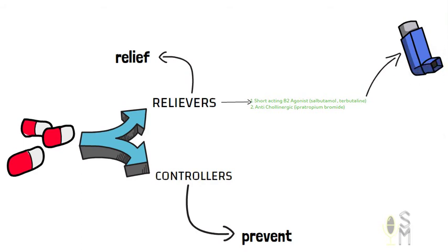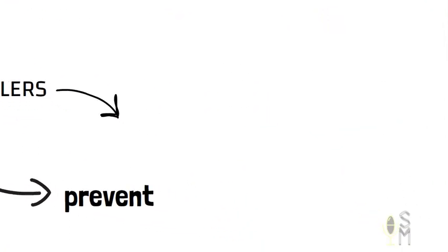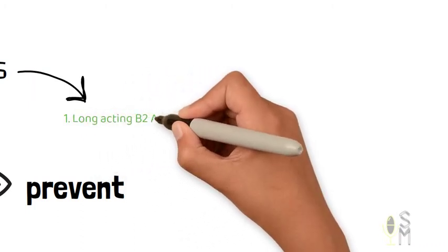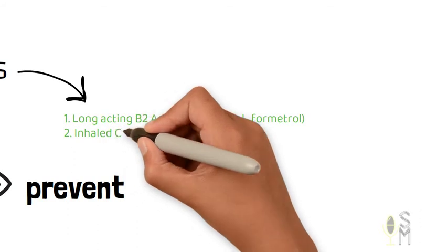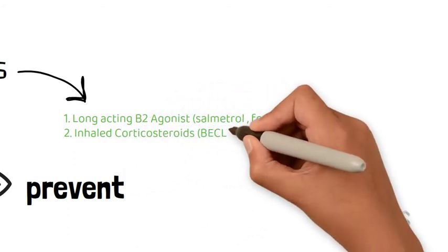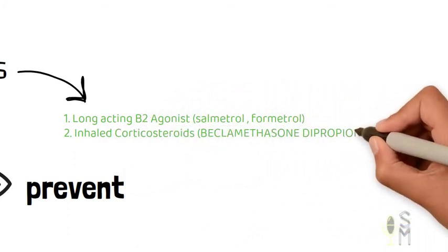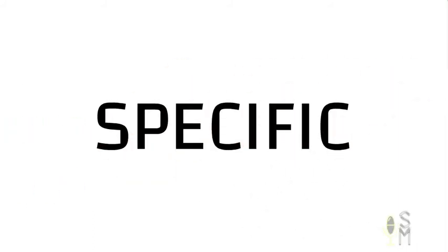Examples of controllers are long-acting beta-2 agonists like salmeterol and formoterol, or inhaled corticosteroids like beclomethasone dipropionate. Prescriptions should be specifically designed for each patient.